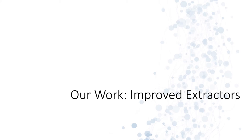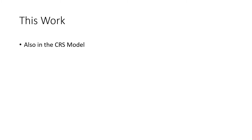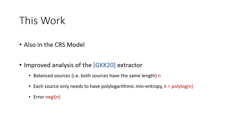This brings me to the first part of our work, where we perform a different analysis of the GKK extractor to obtain improved parameters. Just like GKK, we also focus on the CRS model. In this model, we perform a different analysis — while theirs was more general, ours is more tailored to their specific construction. In contrast with GKK, we are able to handle balanced sources, meaning both sources are allowed to have the same length, whereas GKK explicitly required some imbalance. Moreover, each source only needs to have polylogarithmic min-entropy, whereas GKK required sublinear entropy in one source. Our analysis, just like GKK's, shows that the extractor has negligible error.